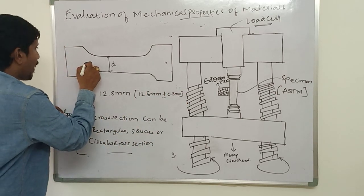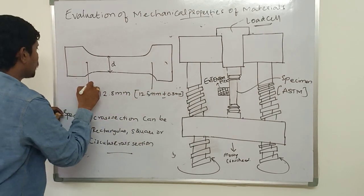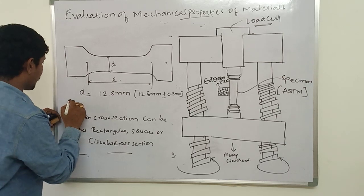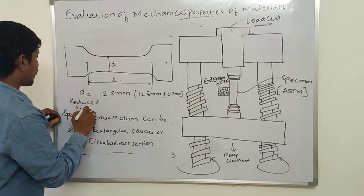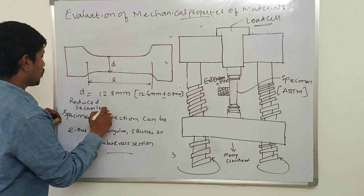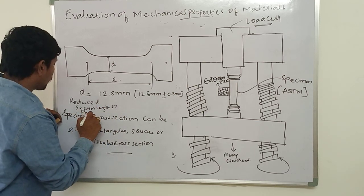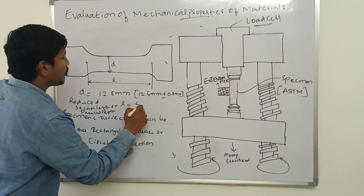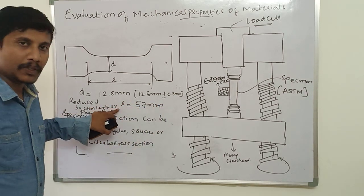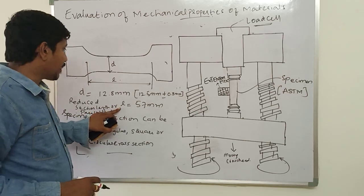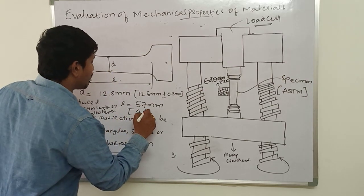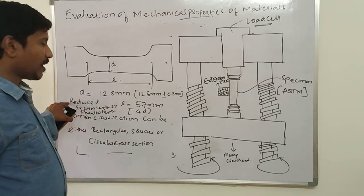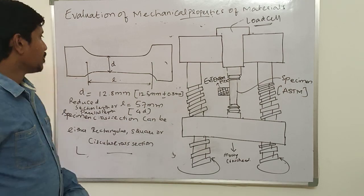The parallel length, also called as the reduced section length, is taken as 57 mm. Generally, the reduced section length is taken as 4 times the diameter.